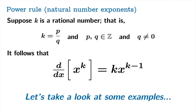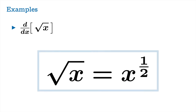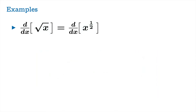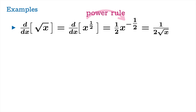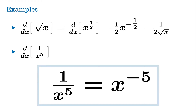Let's look at some examples. The derivative of the square root function: using laws of exponents, √x can be written as x to the one-half, so applying the power rule gives one-half times x to the negative one-half, which can be rewritten as 1 over 2√x. For the derivative of 1 over x to the fifth: using laws of exponents, that's x to the negative five.